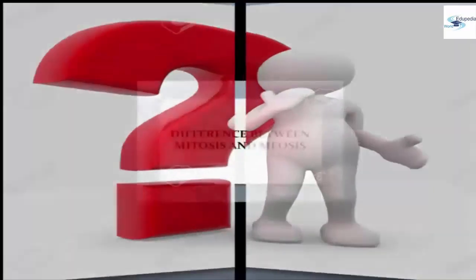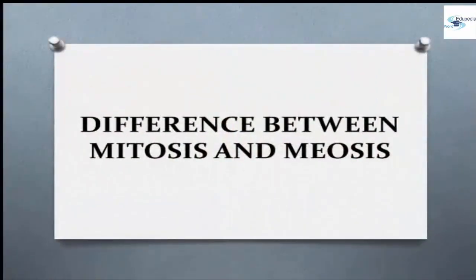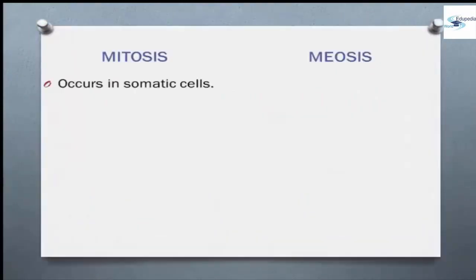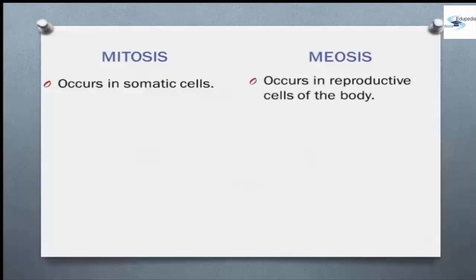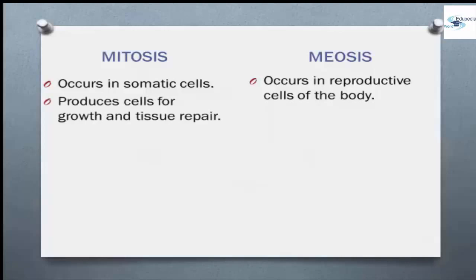These were the significance of meiosis. Now, we will discuss about the differences between mitosis and meiosis. Mitosis occurs in somatic cells — these are all the cells except the reproductive ones. In case of meiosis, the process takes place in the reproductive cells of the body. In case of mitosis, it produces cells for growth and tissue repair.